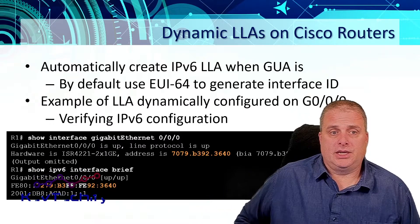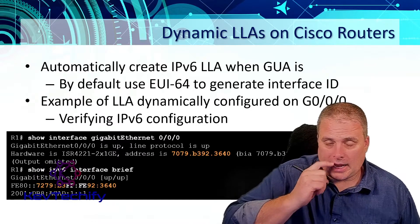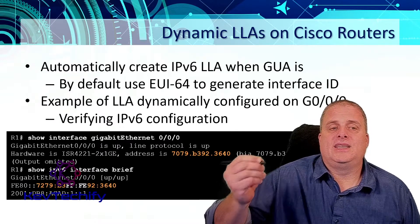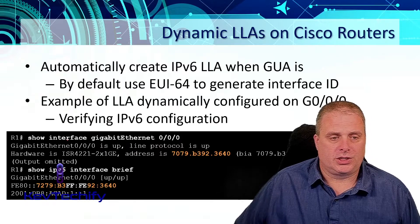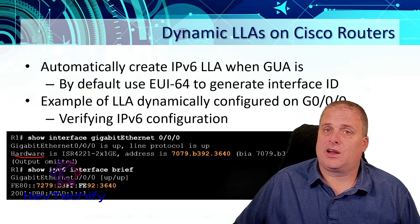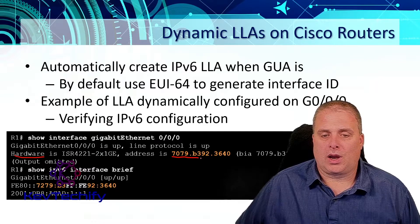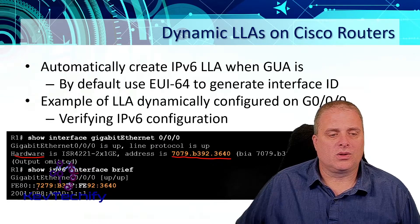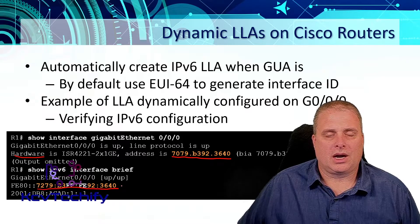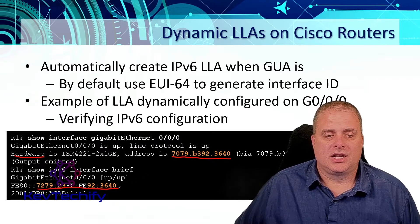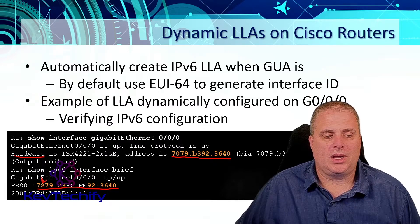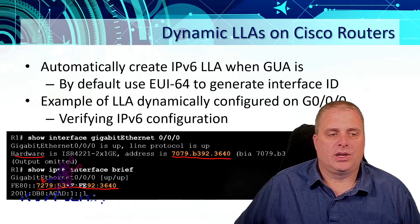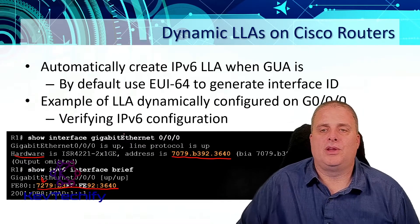On a Cisco router, the EUI-64 method is the default method to generate your interface ID. When we do a show interface of GIG0/0/0, we can see the hardware address — burnt into the hardware — right here. We can see that our link local address was generated via the EUI-64 process: it took our MAC address, inserted FFFE in the center, inverted the 7th bit, and that's the result. We can use the show interface command to verify our IPv6 addresses.